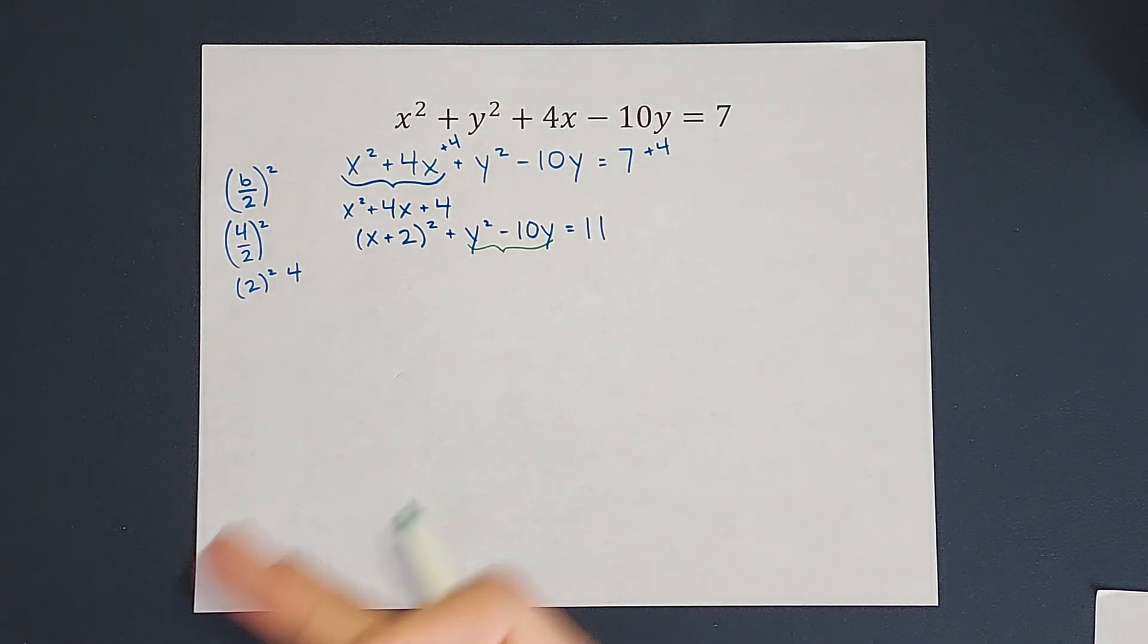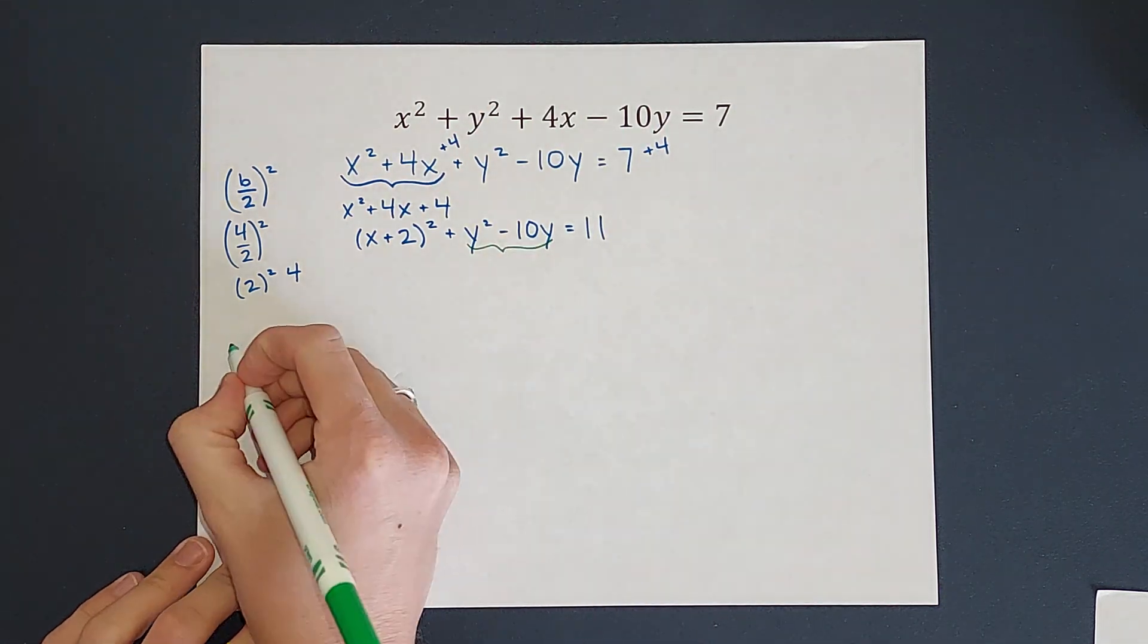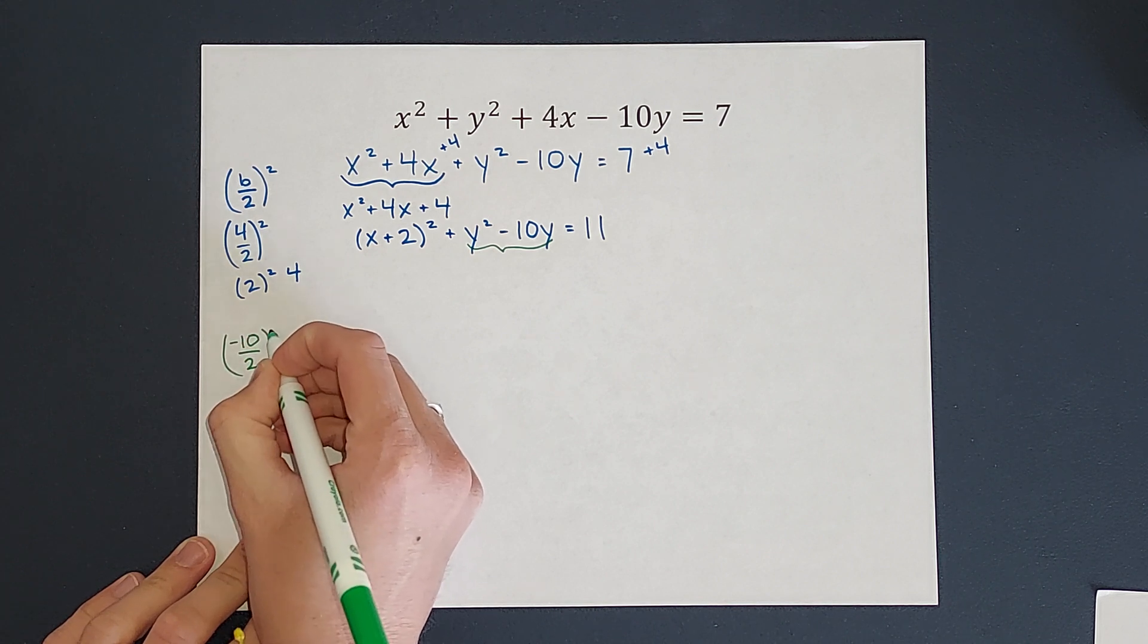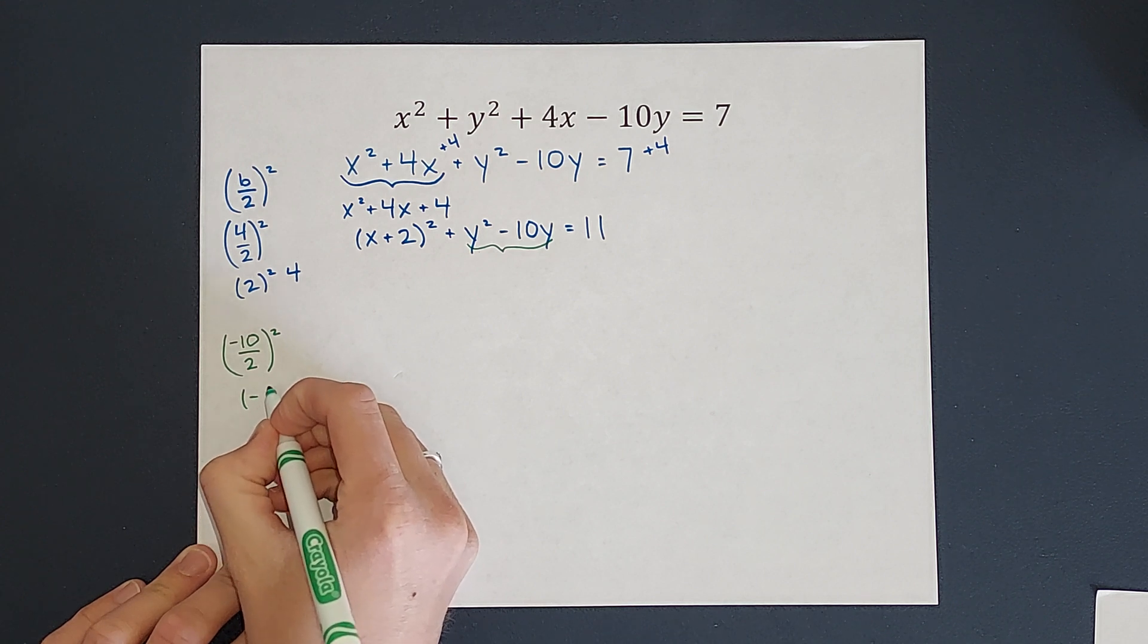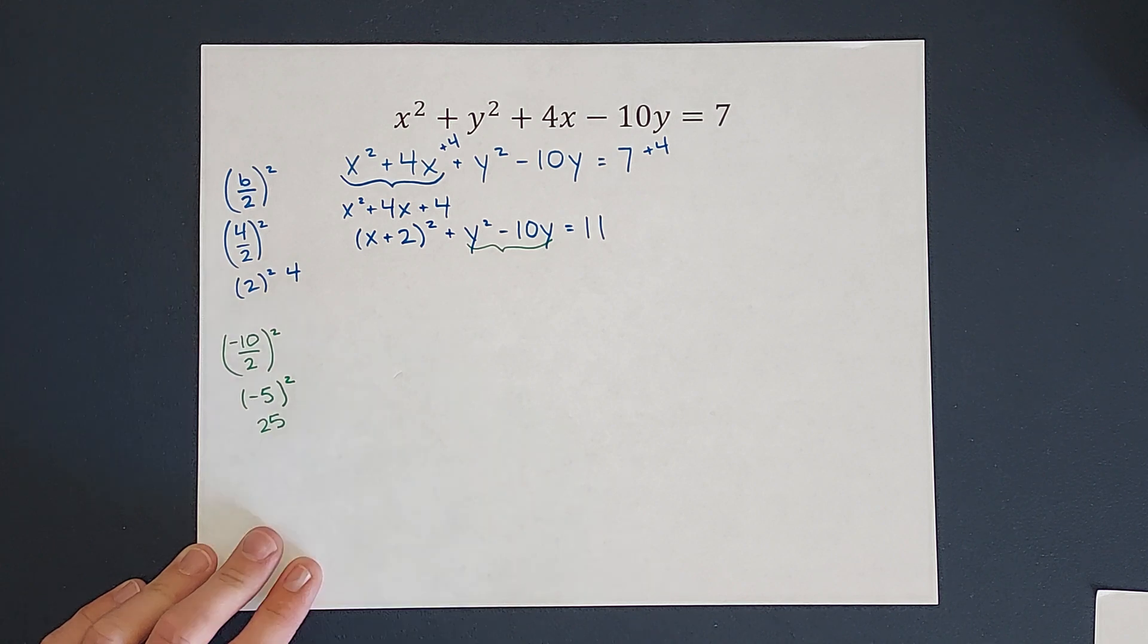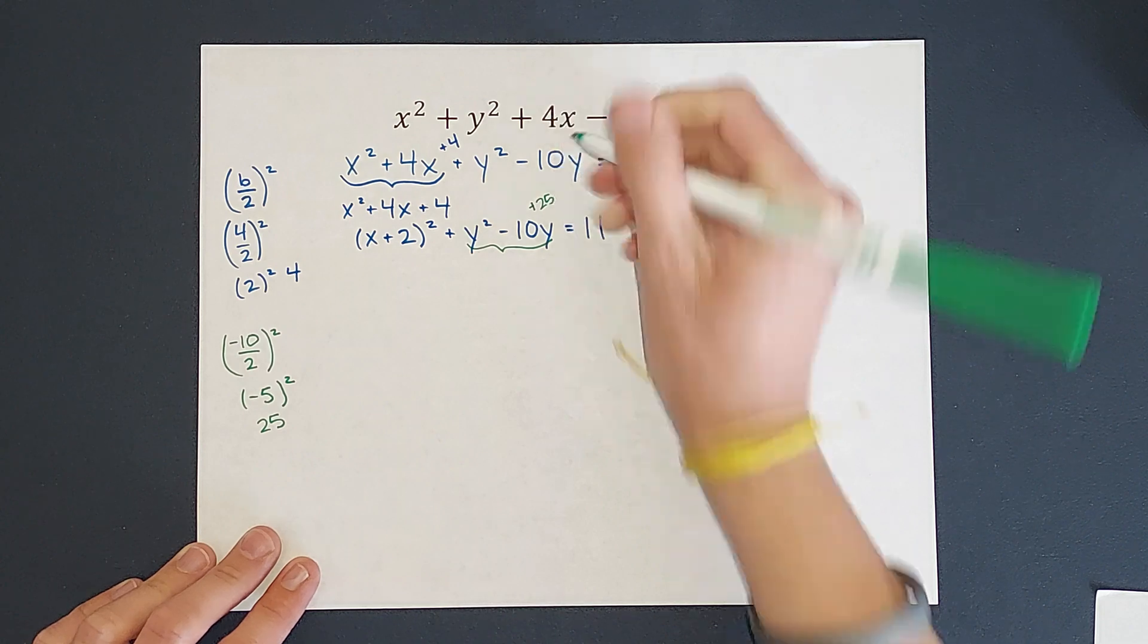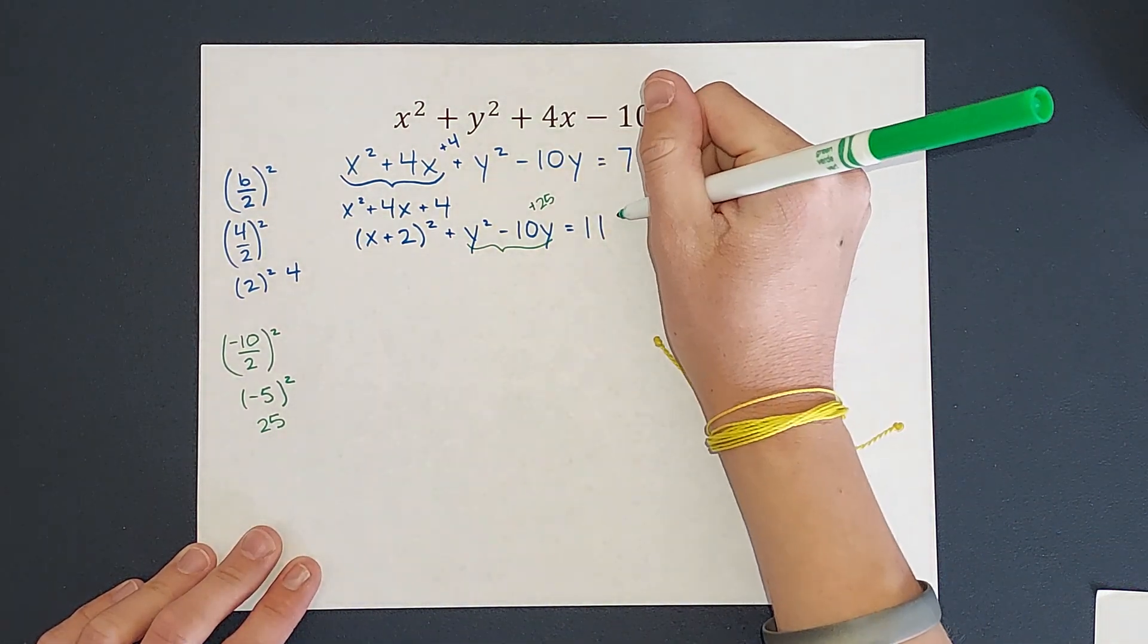So to figure out what number I add to get it like that, I'm going to take negative 10, divide it by 2, and square it. Okay, negative 10 divided by 2 gives me negative 5. We're going to square that. Negative 5 times negative 5 gives me a positive 25. So I'm adding 25 to this side of the equal sign, so I've got to add it to the other side of the equal sign.